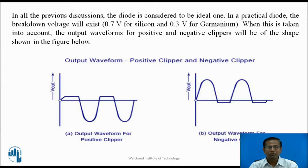Up till now we used the ideal diode. But if we use a practical diode — either silicon or germanium — for the positive clipper, 0.7V is developed across the load for the complete positive half cycle, and minus 0.7V for the negative half cycle. If we use germanium, the drop across the diode is 0.3V, meaning 0.3V appears across the positive and negative half cycles.